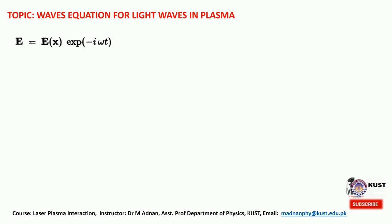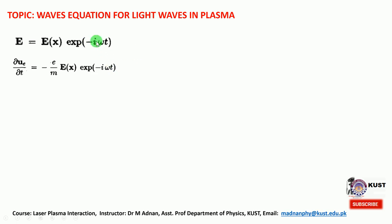If we assume that there are no large imposed or self-generated magnetic fields, we'll begin with the linearized plasma response to a high-frequency field of the form E = E₀ e^(−iωt). This ω is the frequency of the light waves — the electromagnetic waves incident on the plasma. Of course, this ω has to be greater than the plasma frequency ωp in order to have penetration inside the plasma.